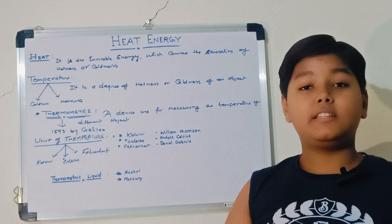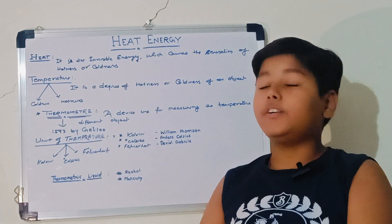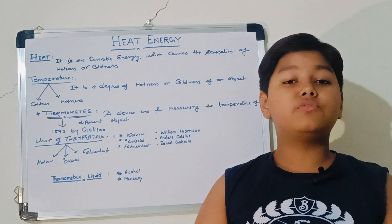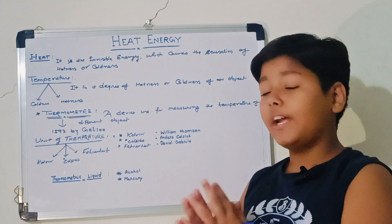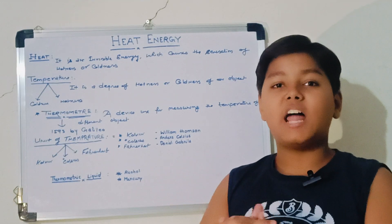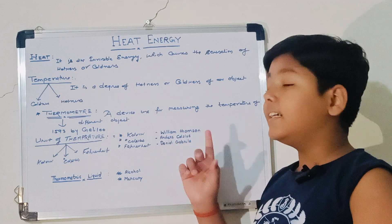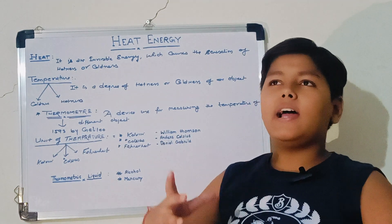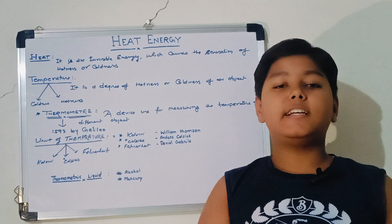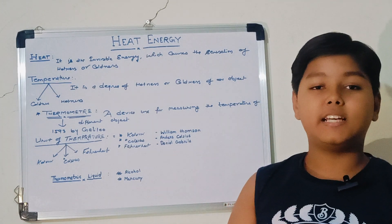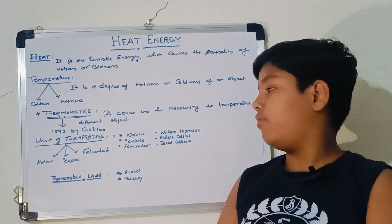So there are mainly three units of temperature. So the SI unit of temperature is Kelvin which was founded by William Thomson. So the next that we use in our common day to day life is Celsius, founded by Andrew Celsius. You listen that today's temperature is 30 degrees Celsius. Yesterday's temperature was 28 degrees Celsius. So Celsius is the most common unit that we use in our day to day life.